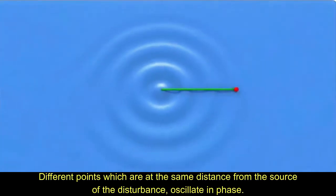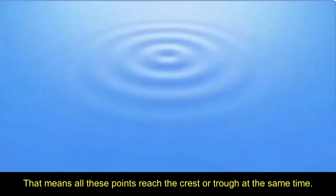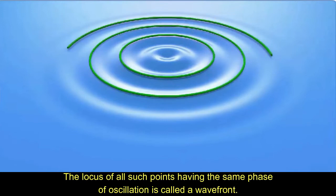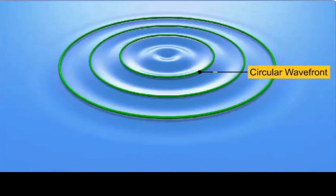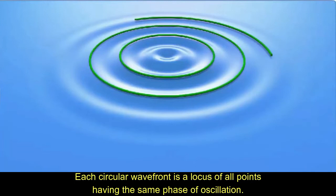Different points which are at the same distance from the source of the disturbance oscillate in phase. That means all these points reach the crest or trough at the same time. The locus of all such points having the same phase of oscillation is called a wavefront. In case of water waves on the surface of water, we observe circular wavefronts. Each circular wavefront is a locus of all points having the same phase of oscillation.